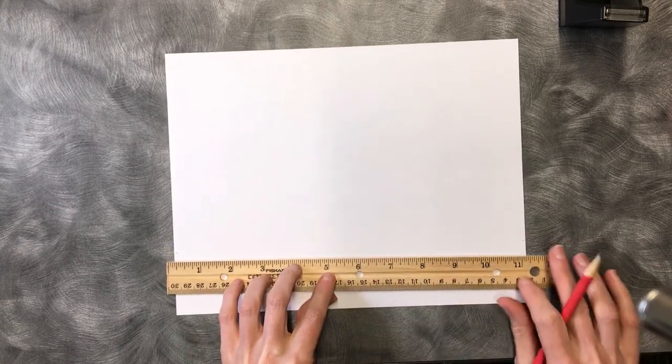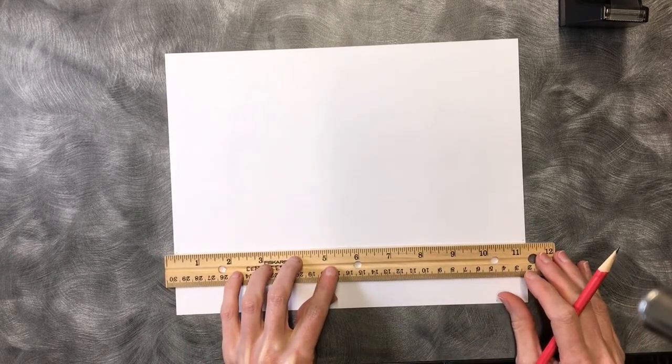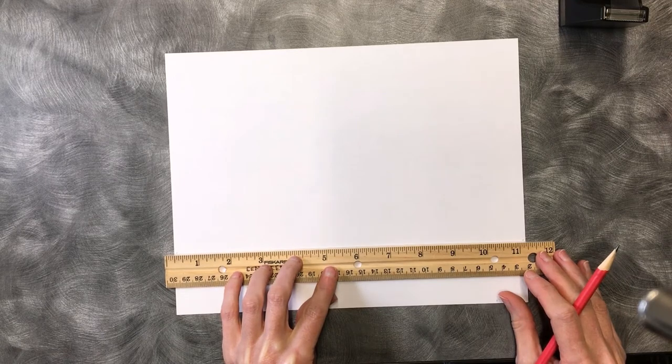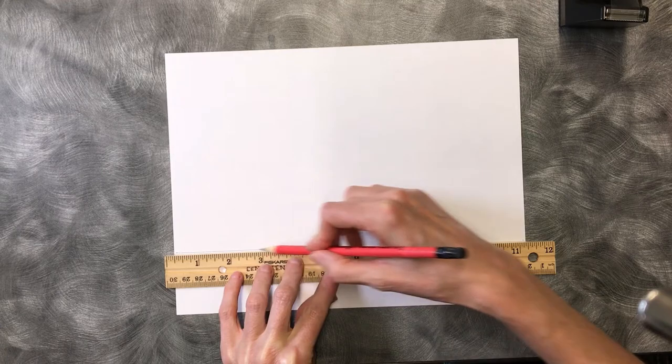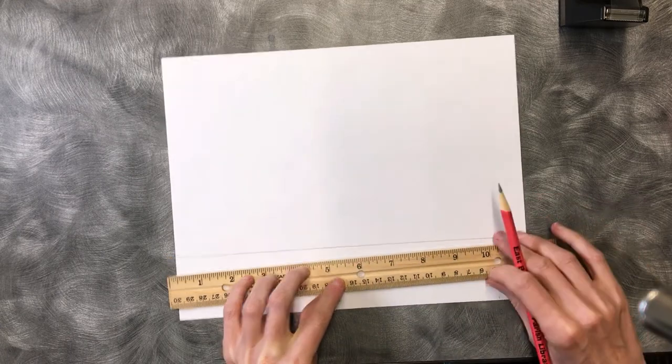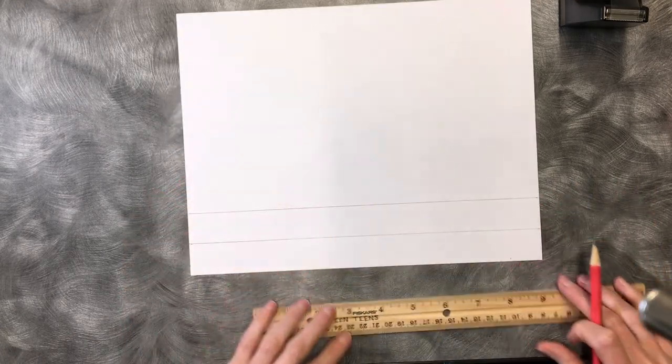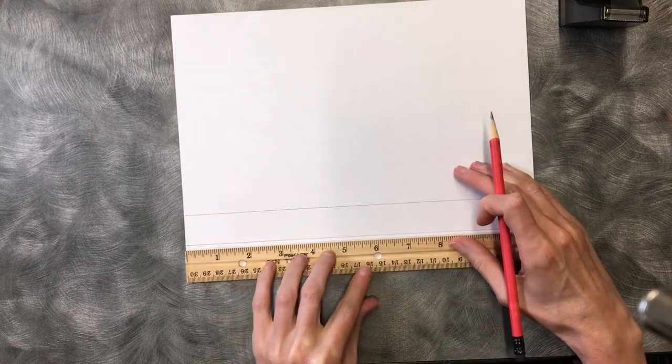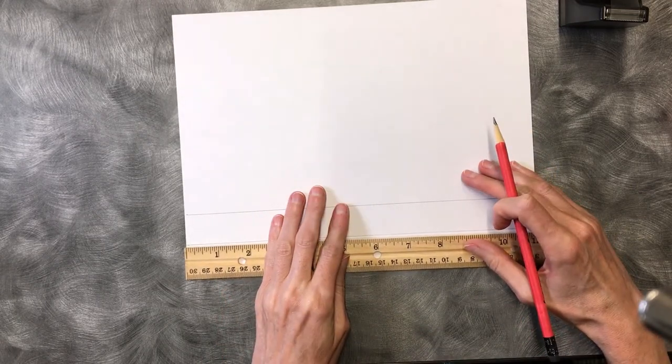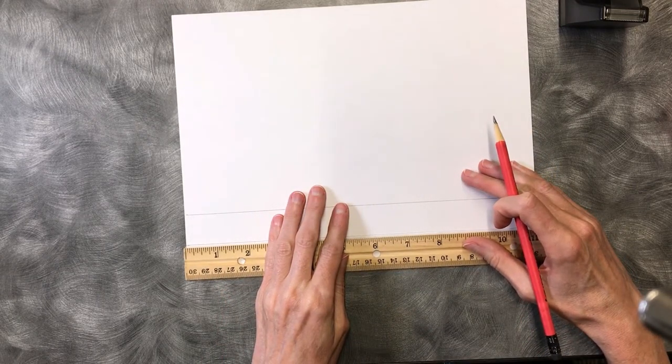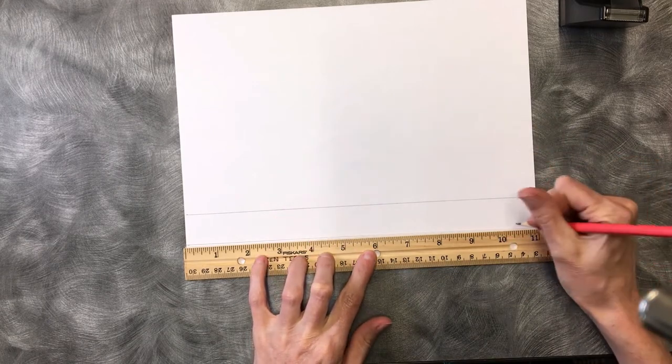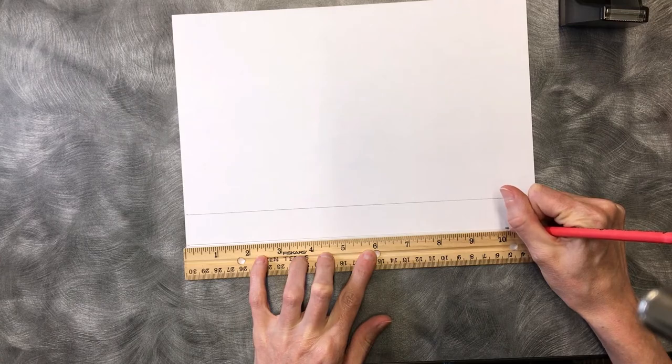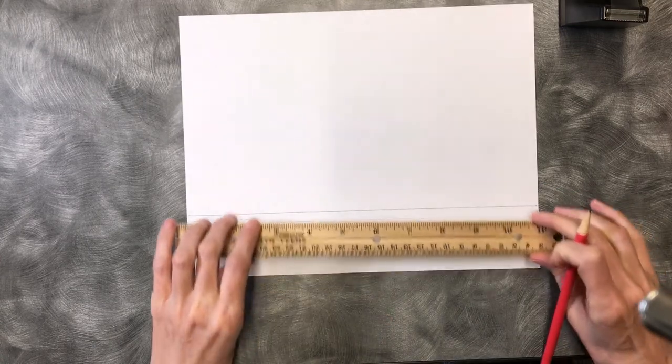For the second one I'm going to do the same thing. Line up the hash marks with your straight edge. I had made that ten inch mark. I'm going to line up this straight edge with the first line and make a mark at ten inches.